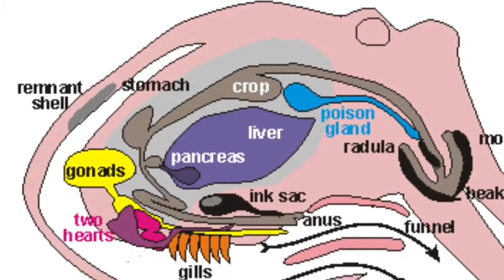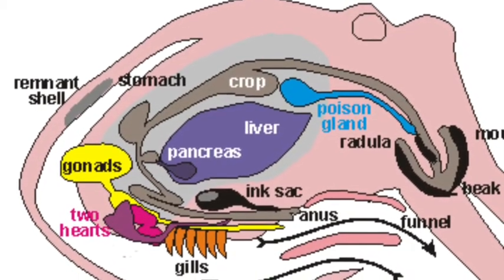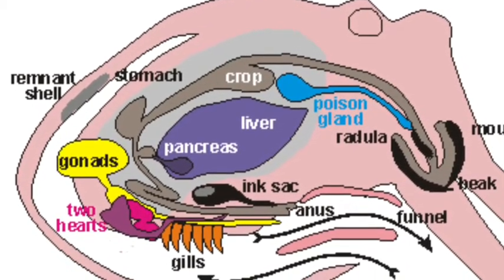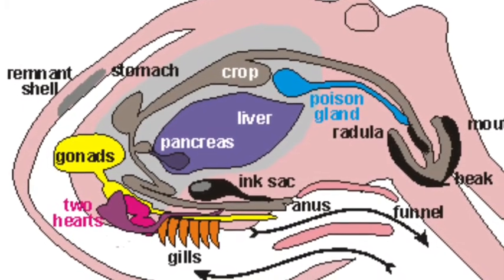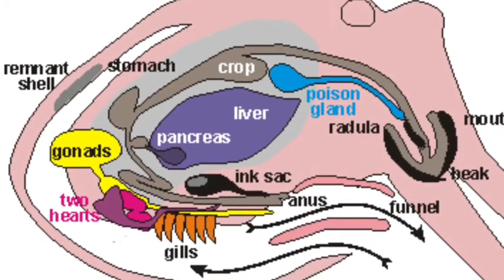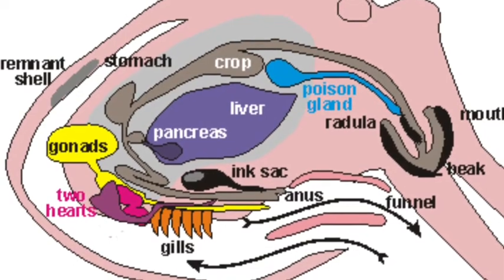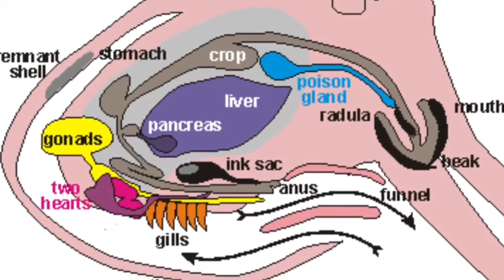For our next example of an invertebrate excretory system, I'm going to be talking about cephalopods, more specifically the octopus. Something that's unique about the octopus is that all of its internal organs are housed within its head.